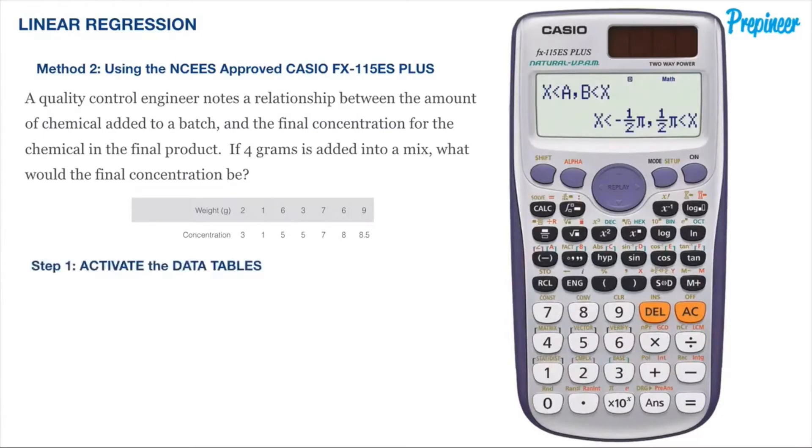So let's hack it and run through the steps. The first step is to activate the data table so we can store the data we are given in this problem statement. To do this, first hit the mode button to come to a screen that looks similar to this. Here you're going to select option 3 for statistics and will be brought to a menu that looks similar to this. Here you will press 2 to select option 2 for A plus BX.